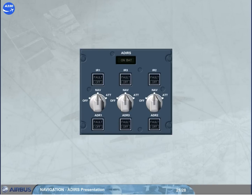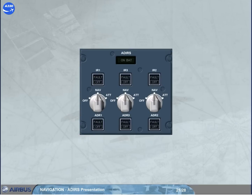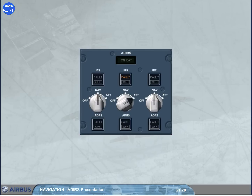The ATT position of the ADRU selector allows the selection of this IR mode, providing only heading and attitude information in case of loss of navigation capability. The three ADR push button switches normally remain on, but they can be selected off in response to ECAM procedures. When done, it only stops the related ADR part and not the IR part. The three IR push button switches operate in the same way. But if an IR fault light is flashing, the related ADRU selector can be selected to ATT in order to recover the attitude and heading information.